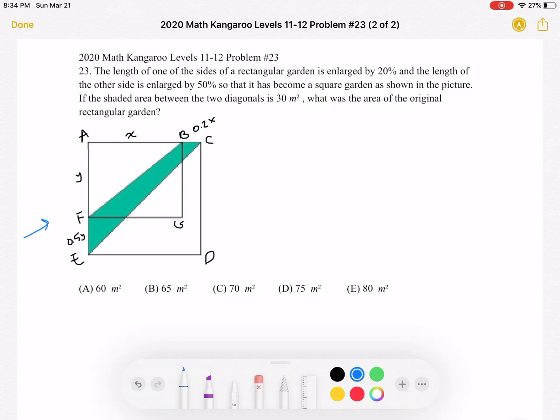So let's start by looking at the original rectangle, which I labeled as AFGB. We can mark one of the side lengths of the rectangle as X and the other one as being Y.